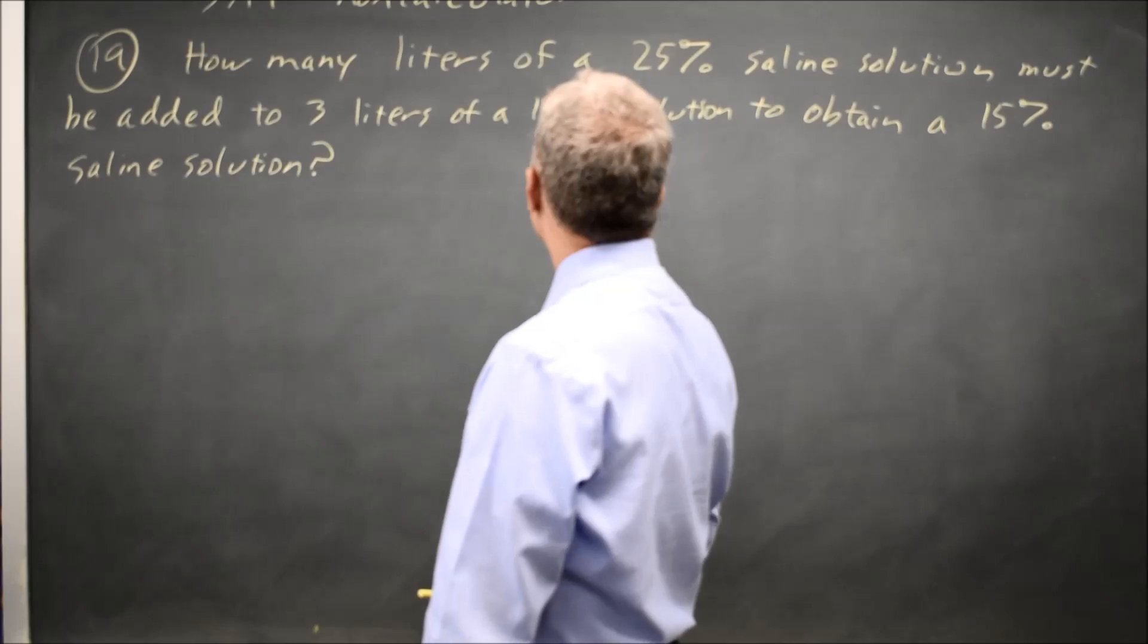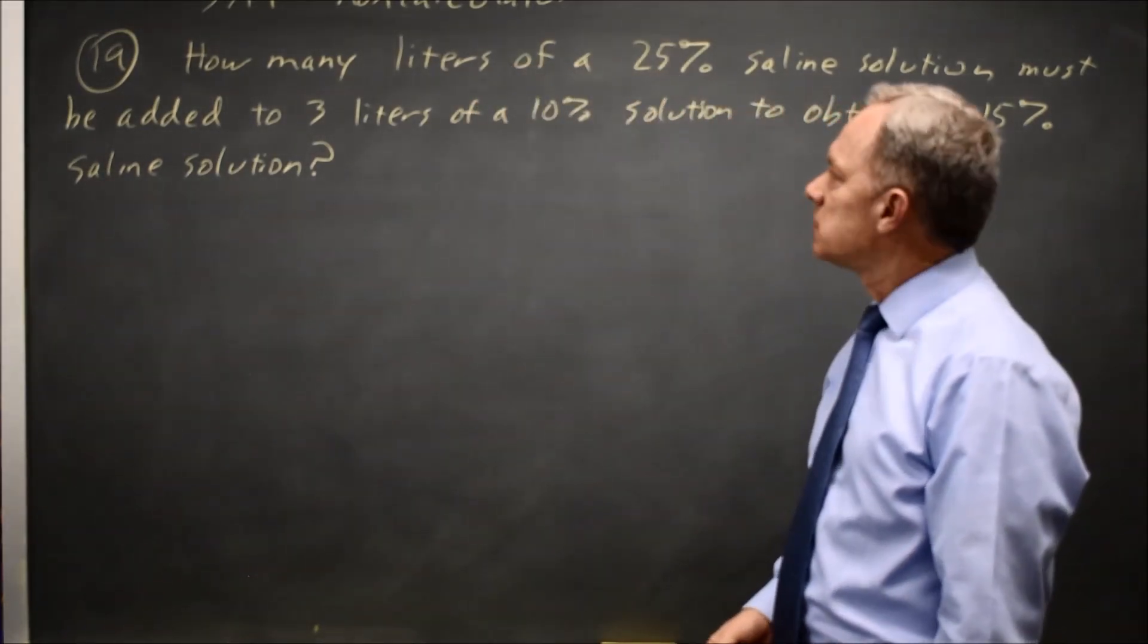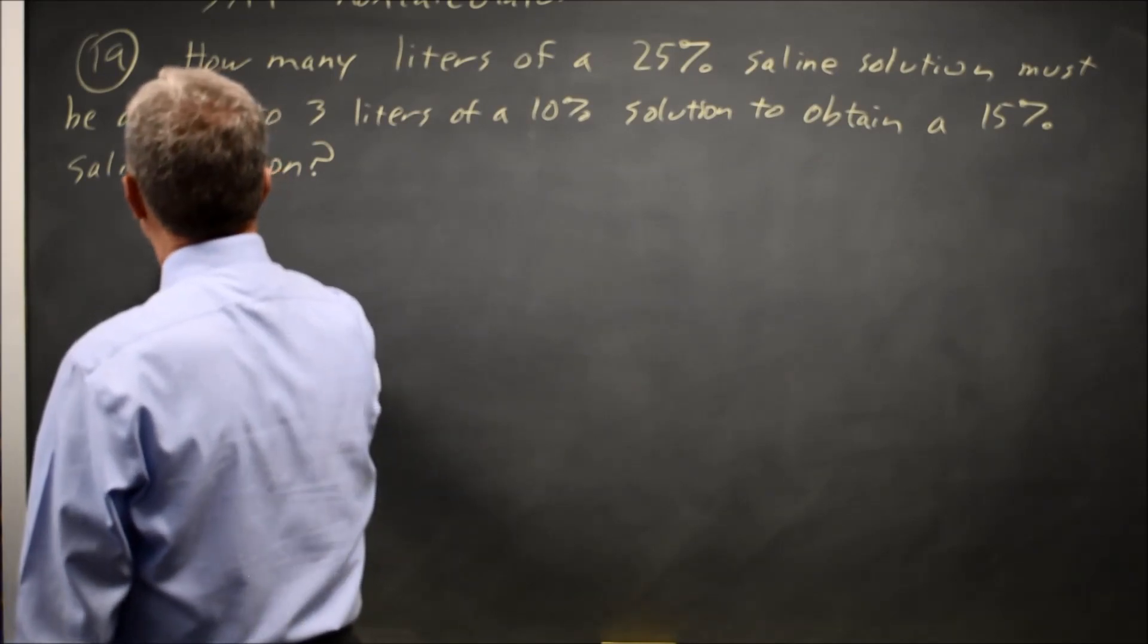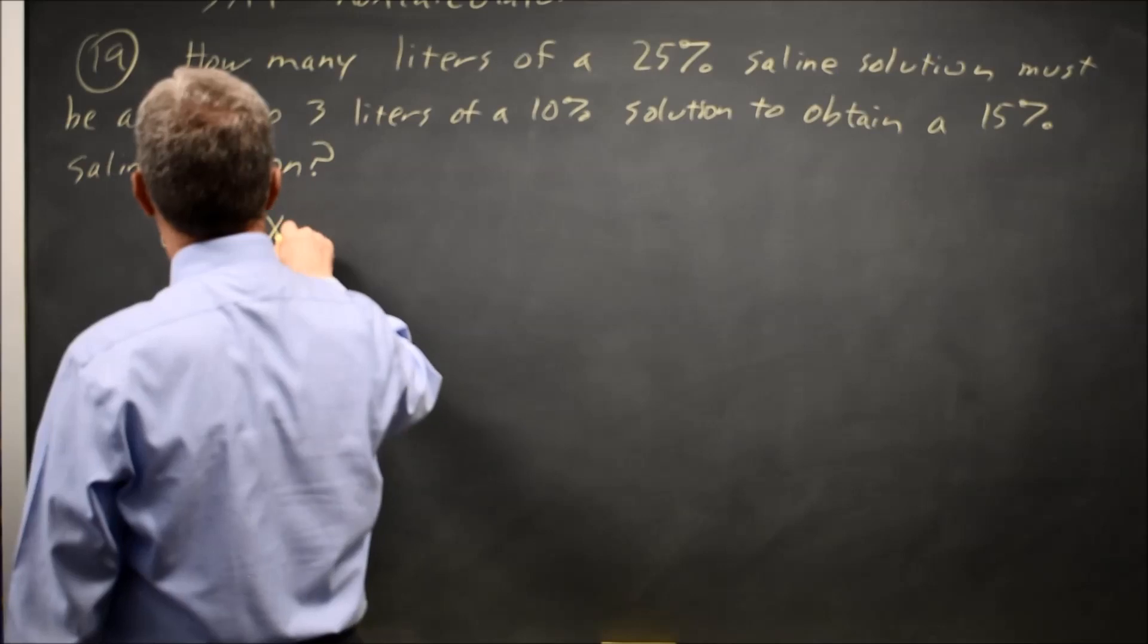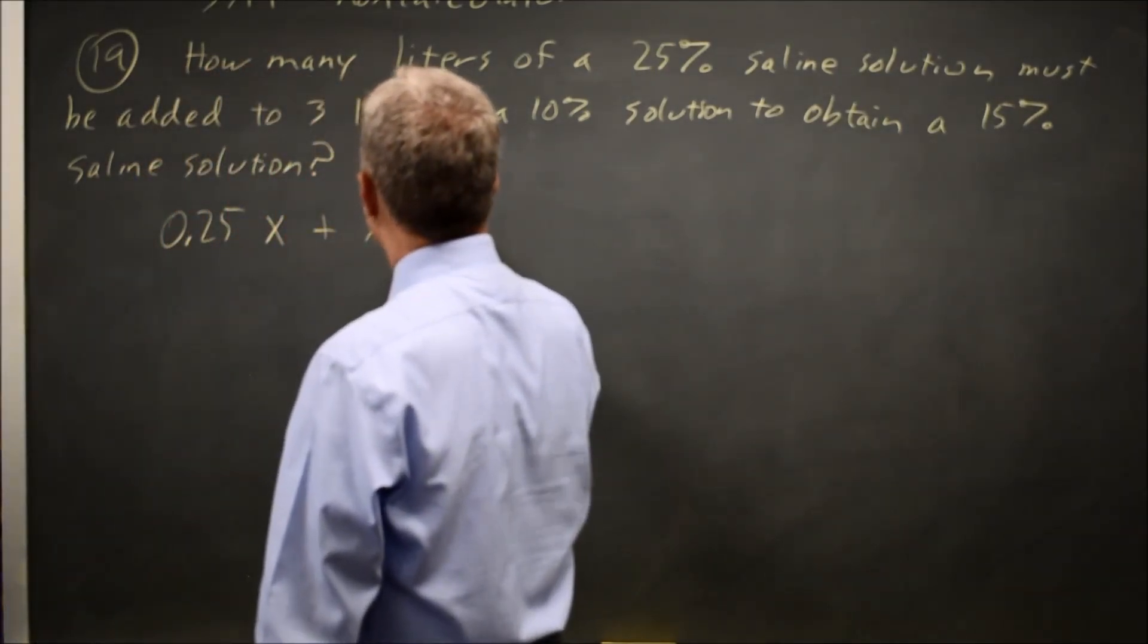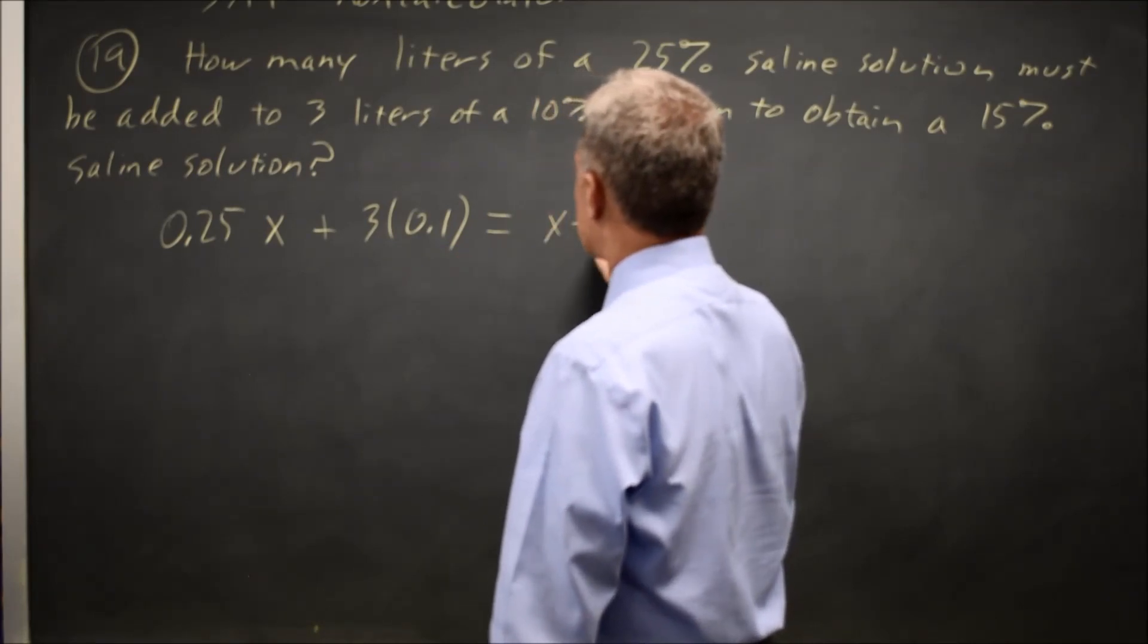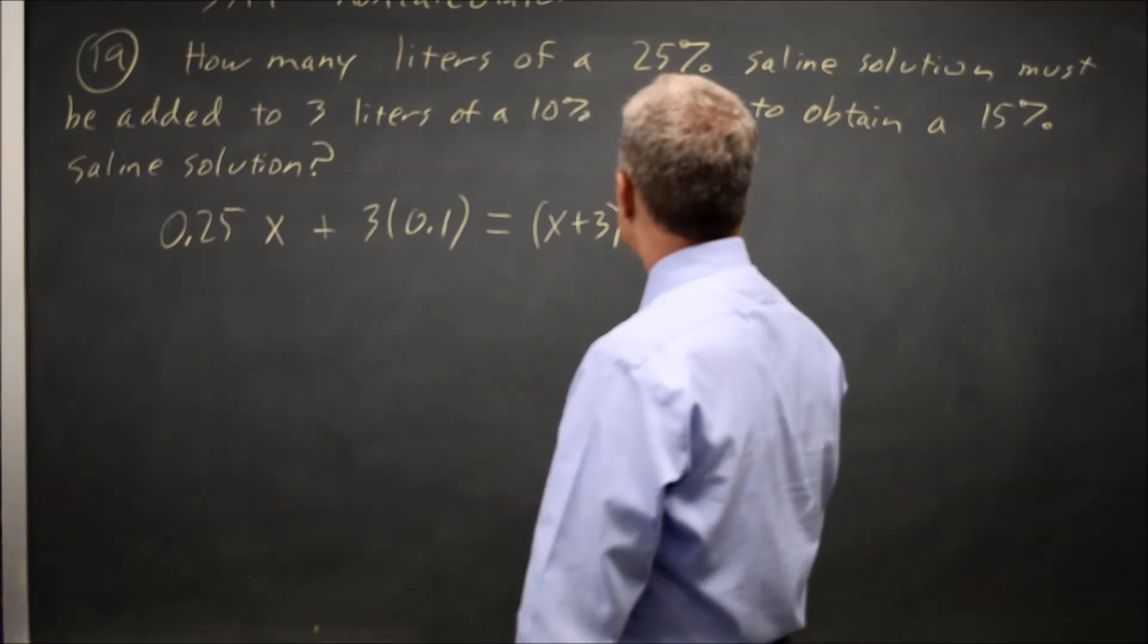So let's write expressions for the amount of salt, because saline is a salt solution, but you don't have to know that it's salt. These are expressions for the amount of whatever is dissolved in the solution. So 25% is 0.25 times, they're asking how many liters, so I'm going to call it x liters, plus 3 liters of 0.1 equals, if this is x liters and this is 3 liters, this is x plus 3 liters of 15%, which is 0.15.